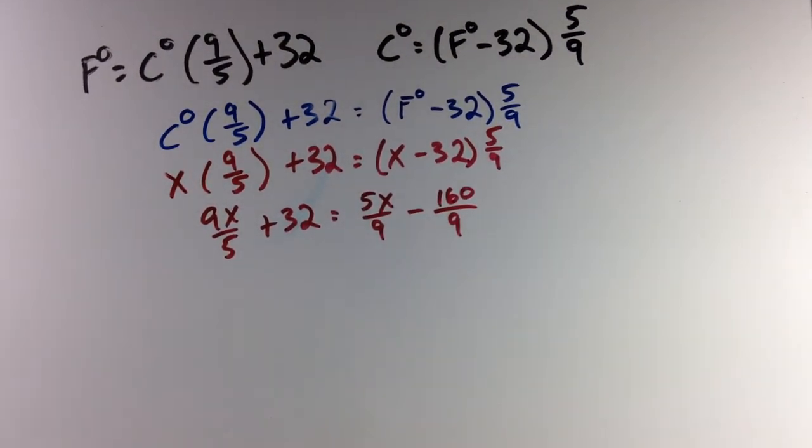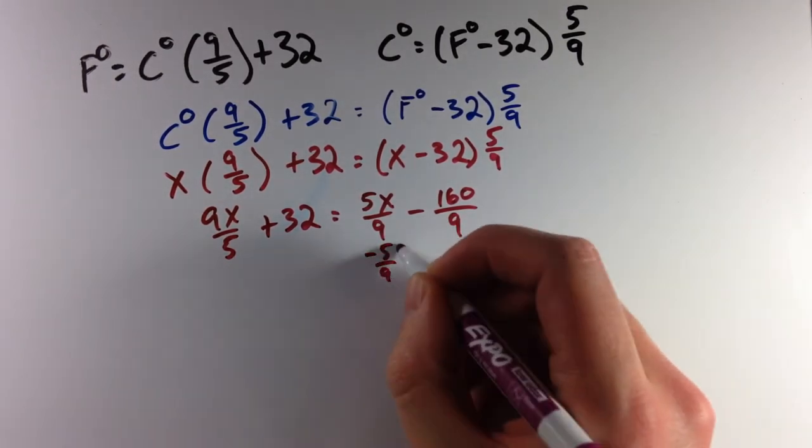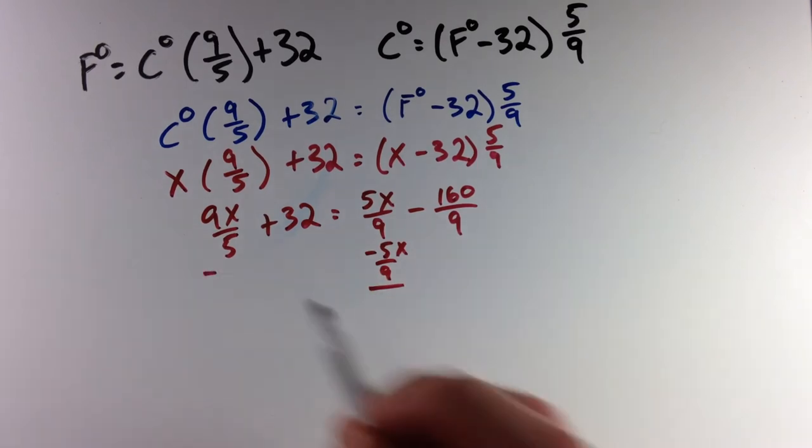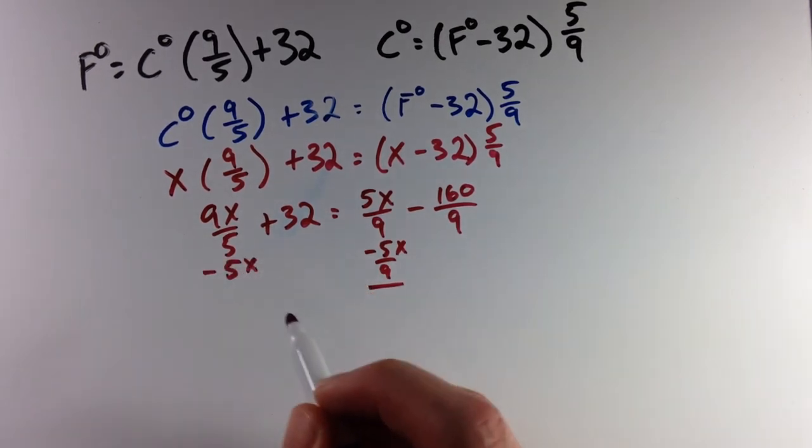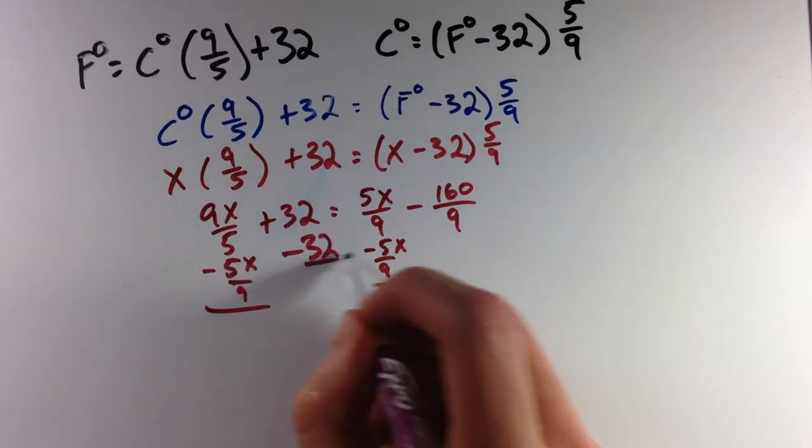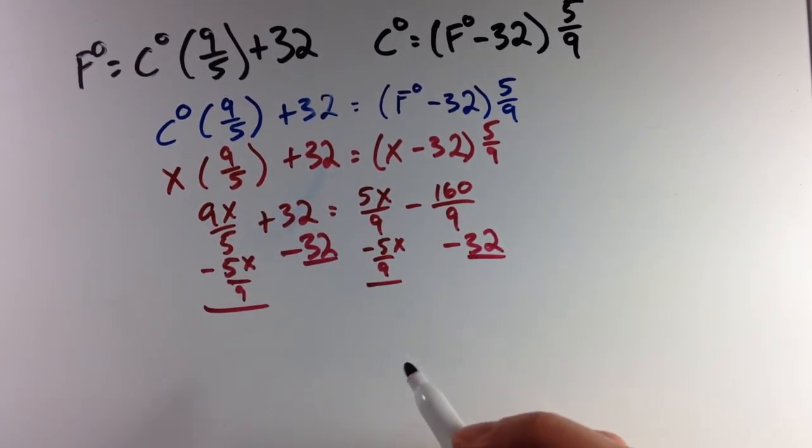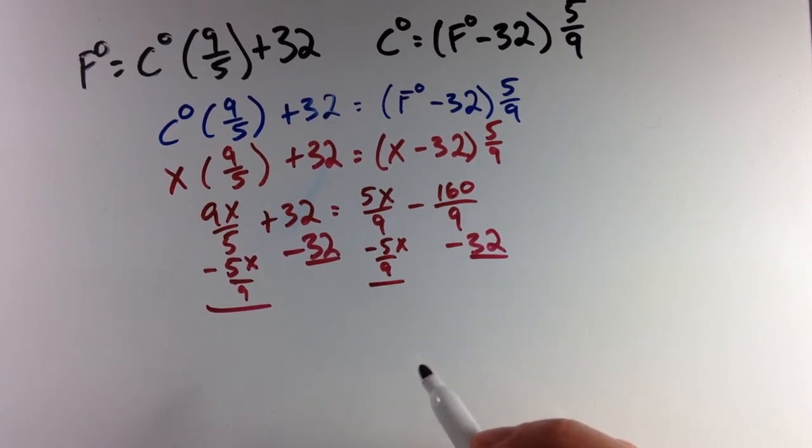Okay, and now we can just solve for x. So let's subtract 5x/9 to both sides. We're getting small here. And I'll subtract 32 to both sides. And we are left with 9/5 minus 5/9.